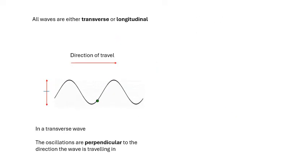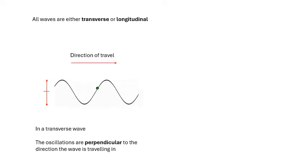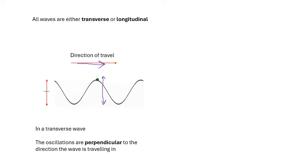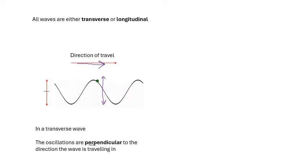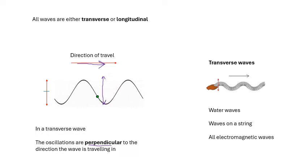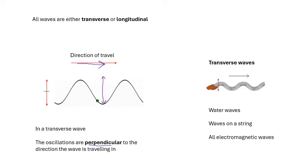There are two types of wave: transverse and longitudinal. In a transverse wave, the particle oscillates at right angles — perpendicular — to the direction the wave is traveling in. Examples include waves on a slinky, water waves, waves on a string, and all electromagnetic waves. Most waves are transverse.